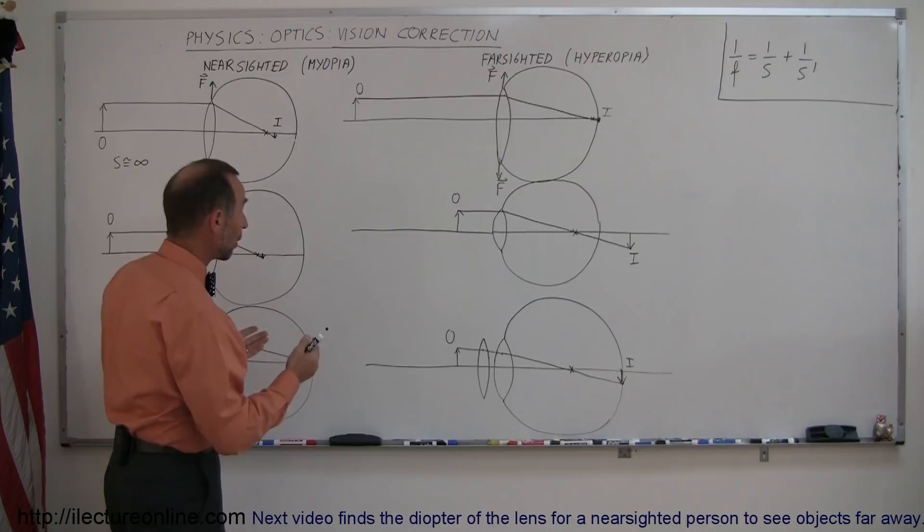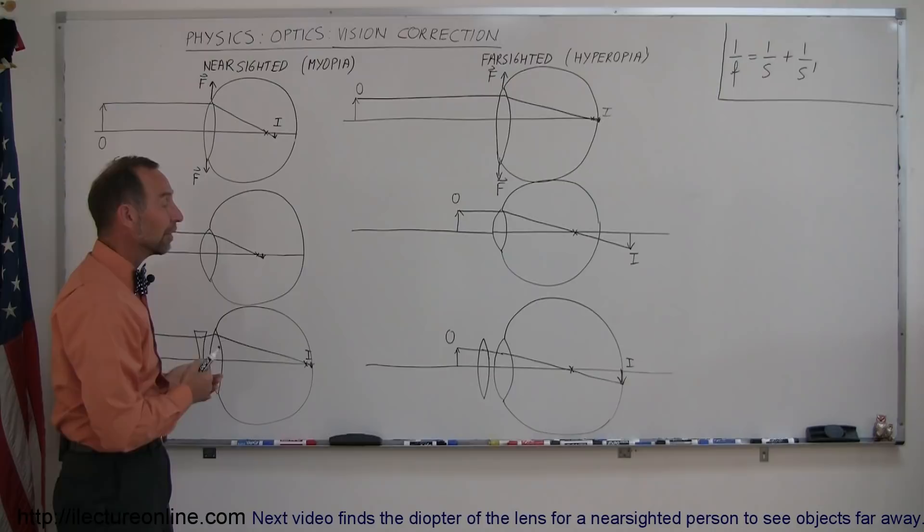And that's how we correct vision, either if you are nearsighted or you're farsighted. And so the next several videos will actually do some practical things, will actually, depending upon the eyesight, figure out what kind of lens you need in order to see clearly if you're either farsighted or if you're nearsighted. That's next.